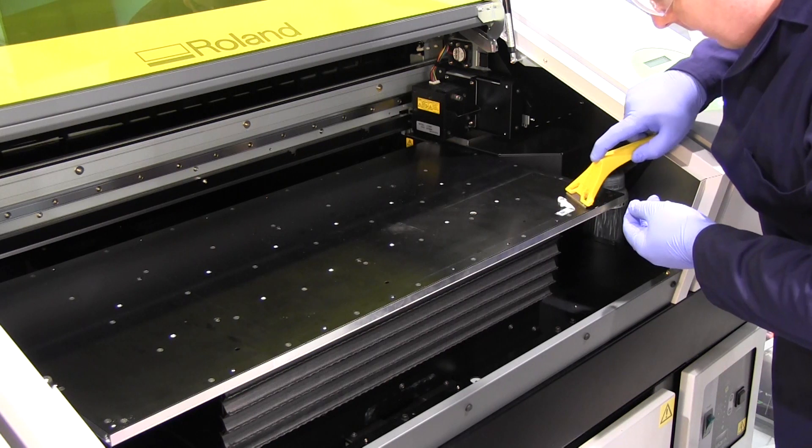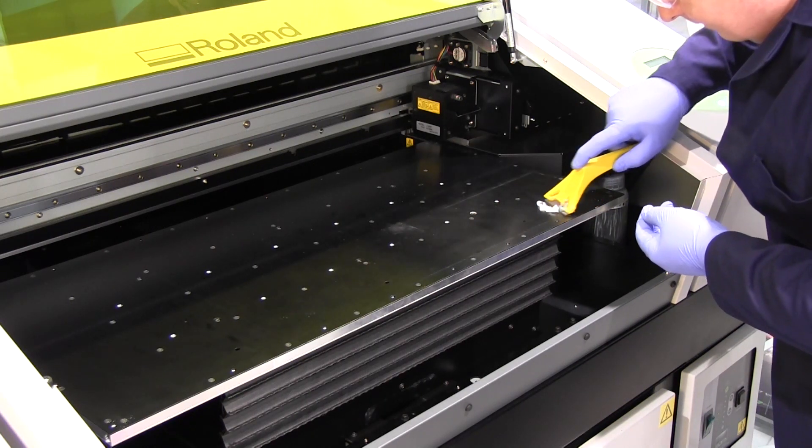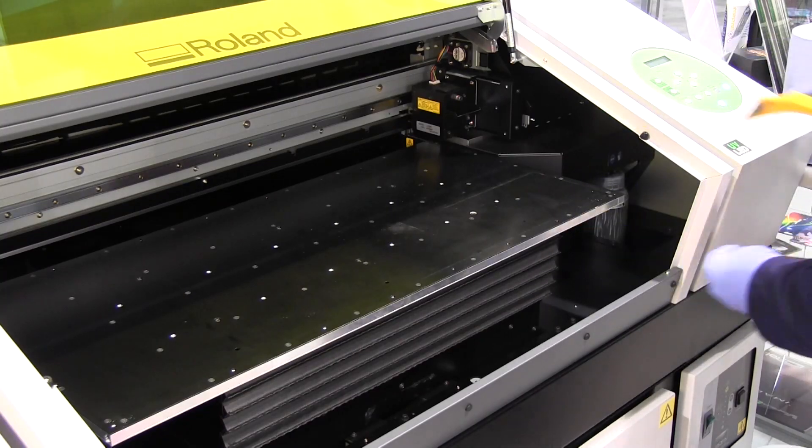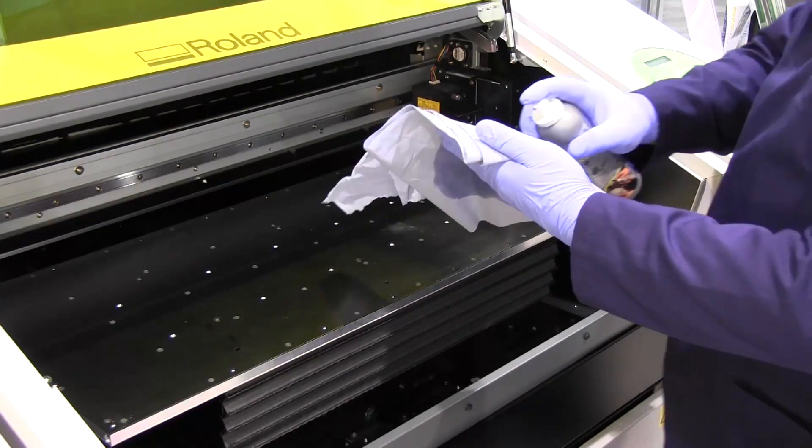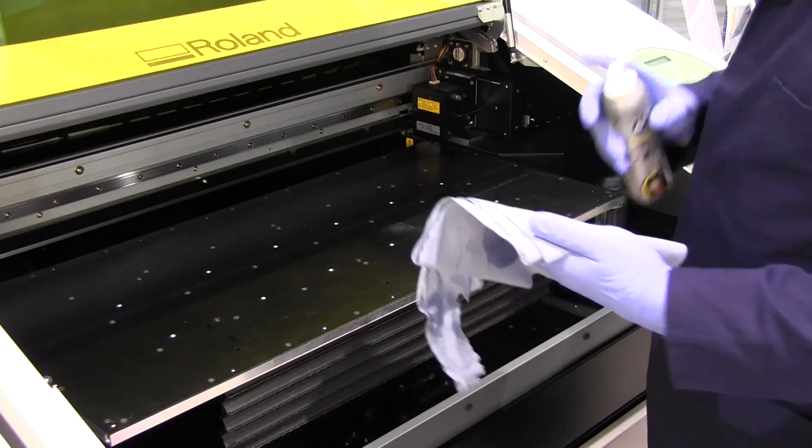Here you can see we are using a scraper to remove any print or ink on the table. Then we're going to use some isopropanol to clean the surface.